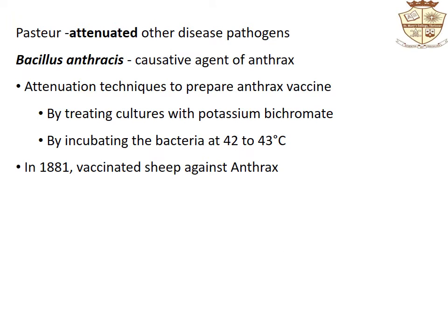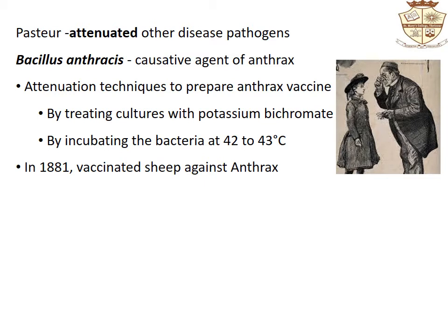Pasteur extended his approach to other diseases and demonstrated that it is possible to attenuate or weaken a pathogen and administer this attenuated strain as a vaccine. He studied Bacillus anthracis, the causative agent of anthrax, and was successful in attenuating the bacterium. Pasteur and Chamberland developed attenuation techniques to prepare anthrax vaccine. In 1881, Pasteur vaccinated a group of sheep with heat-attenuated Bacillus anthracis, then infected both vaccinated and unvaccinated sheep with a virulent culture. All the vaccinated sheep lived and all the unvaccinated animals died, indicating the potential of the attenuated anthrax bacillus as a vaccine.